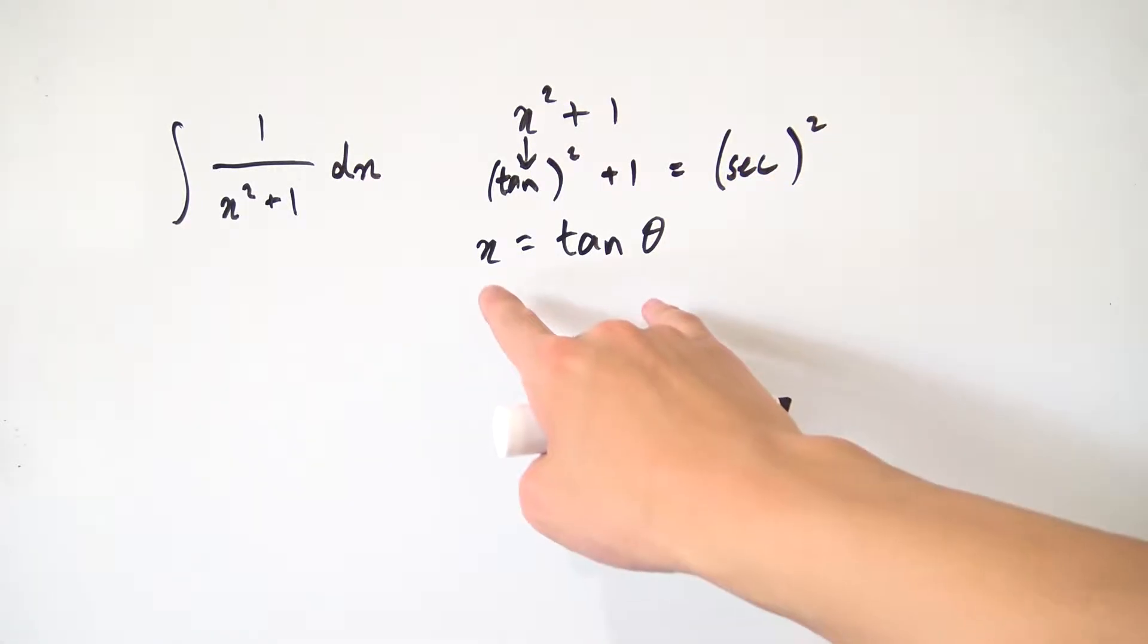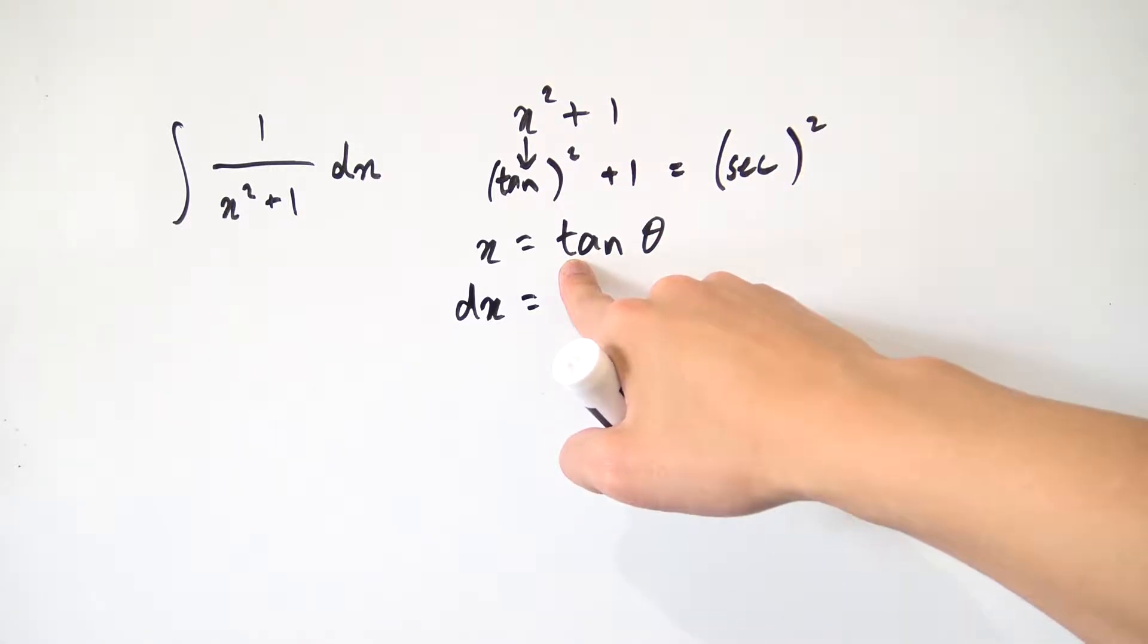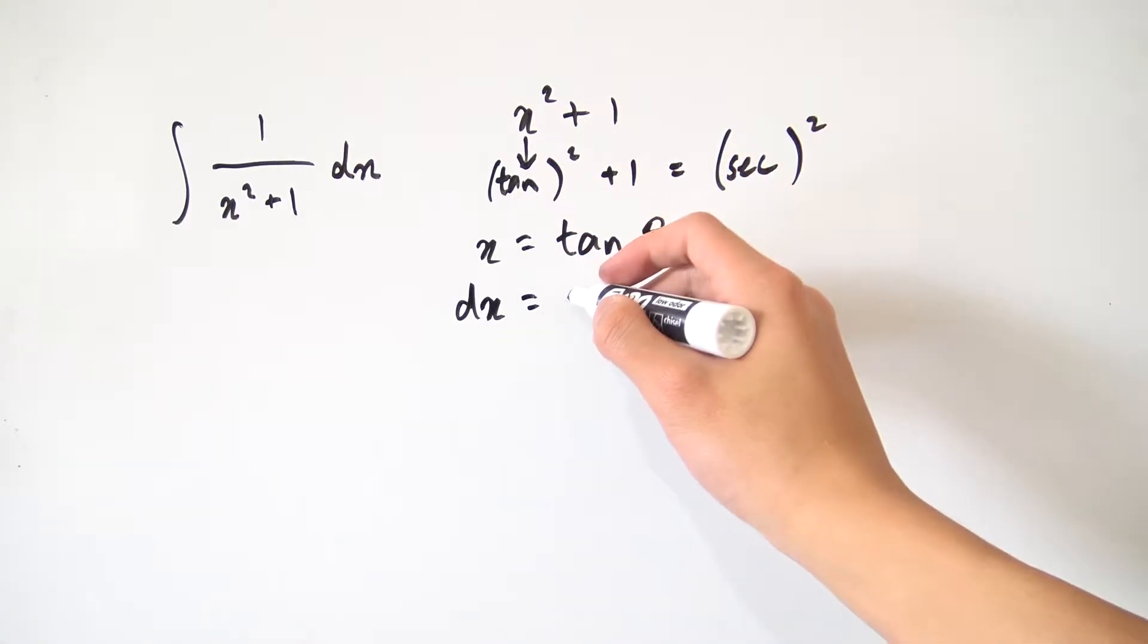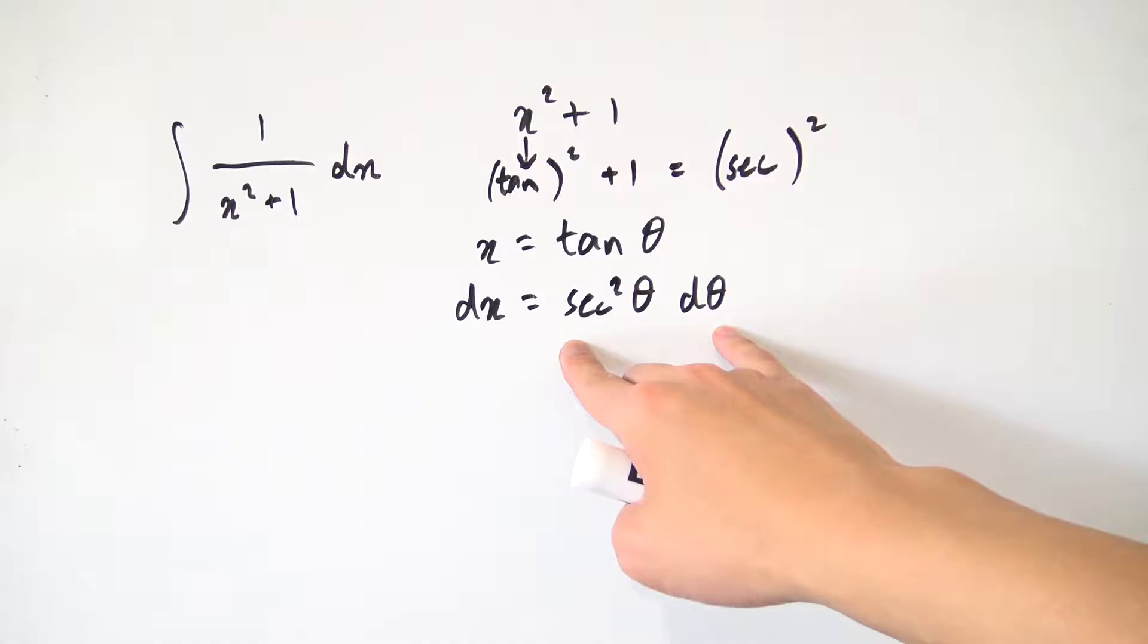And notice once we do the substitution, we're going to have tangent in here. But also notice this dx right here, we still have to deal with this part. So to find this dx in terms of theta, we just have to differentiate both sides. So we have dx being equal to the derivative of tangent theta, which is actually secant squared of theta, times d theta. So this is our little expression for our dx here once we do the substitution.